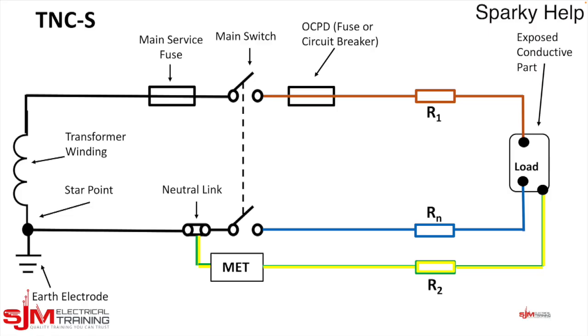The MET can be internal within a distribution board or it can be external on the wall. We have our earthing conductor which connects from the MET to the neutral link to the source of earth. And this conductor that goes back then is a PEN conductor.